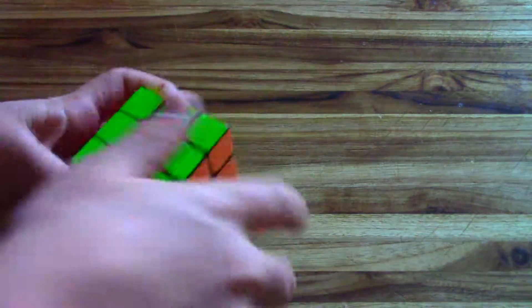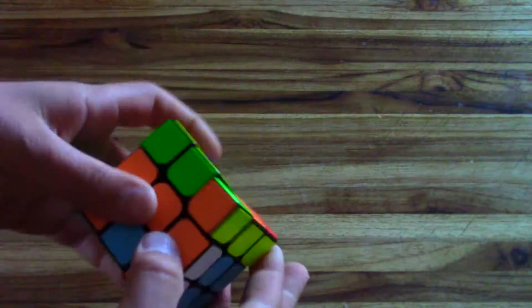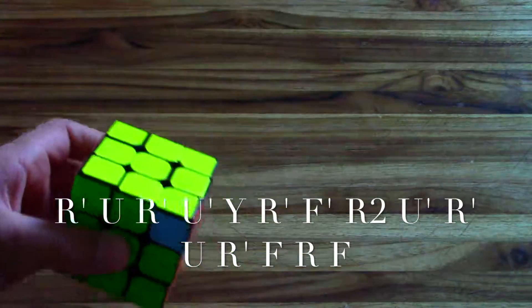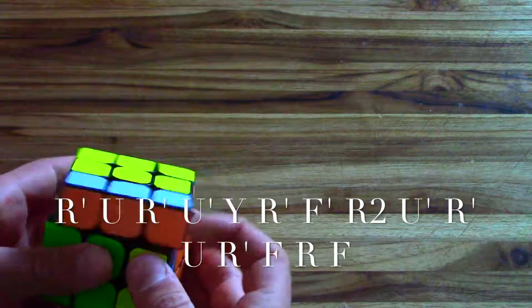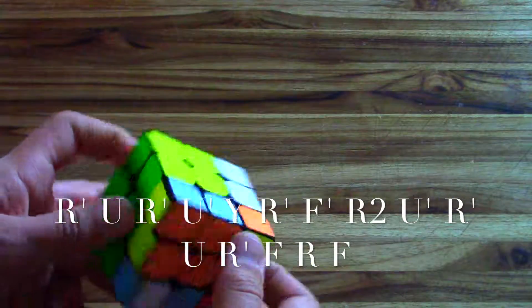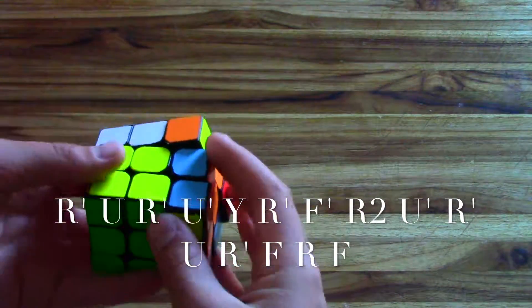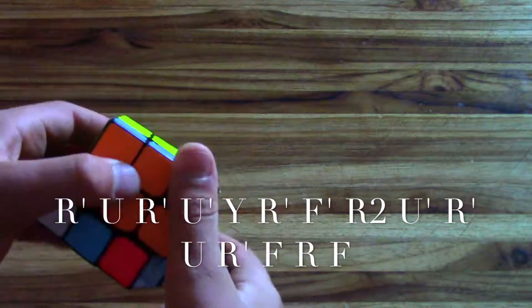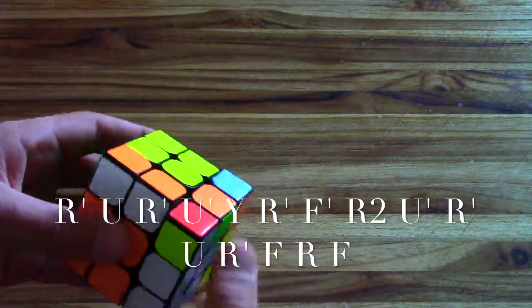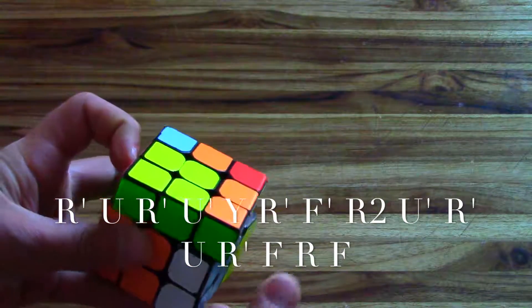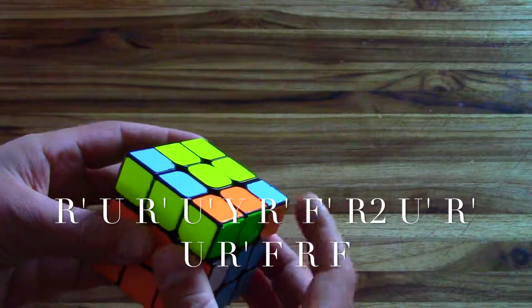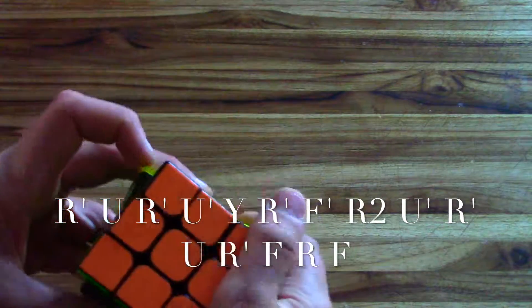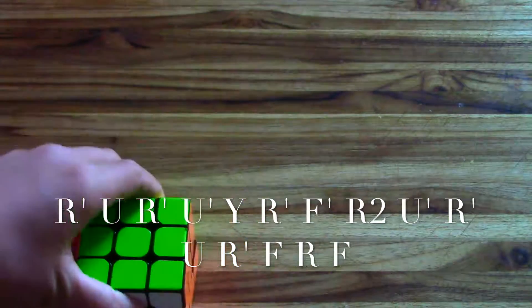So what you do is you do R' U R' U' Y, which Y is just turning the whole cube clockwise like that. So R' F' R2 U' R' U R' F R F. So like that.